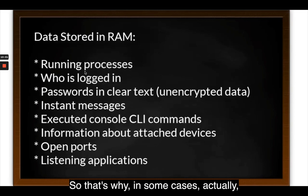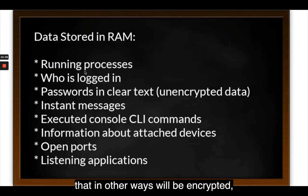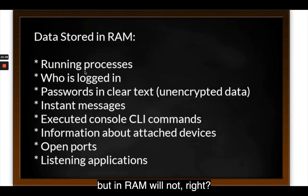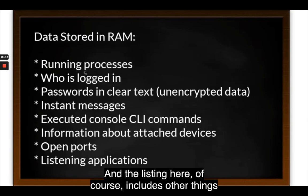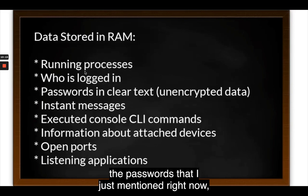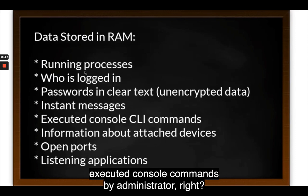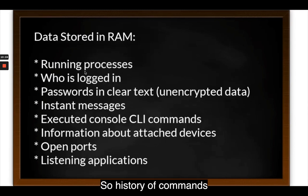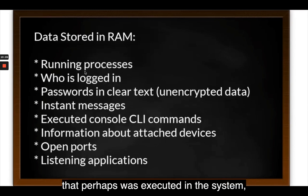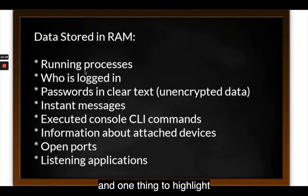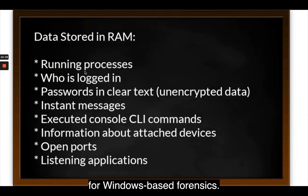That's why in some cases you can obtain information from RAM that would otherwise be encrypted. The data available includes running processes, passwords, unencrypted data, instant messages, executed console commands by an administrator, history of commands executed on the system, and open ports. It's important to highlight that this is not only applicable for Windows-based forensics, but for any type of operating system.